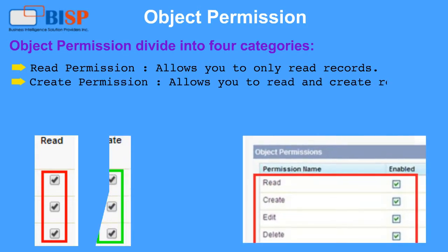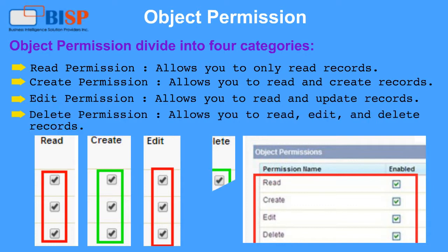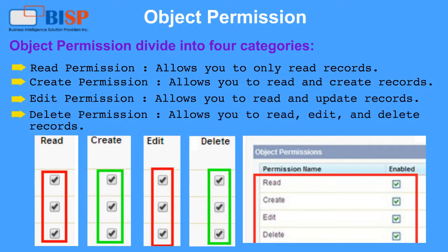Create permission allows you to read and create records. Edit permission allows you to read and update records. Delete permission allows you to read, edit, and delete records.